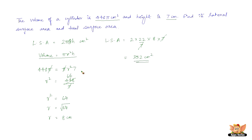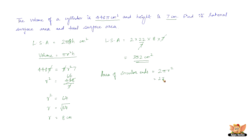Now that we found the lateral surface area, let us find the total surface area. Total surface area is the lateral surface area plus the areas of the top and the bottom of the cylinder. The area of one circular end is πr², but we need two — top and bottom — so it is 2πr². That gives 2 × (22/7) × 8².